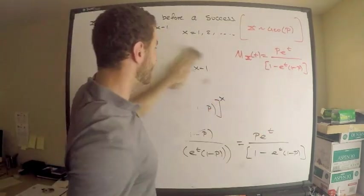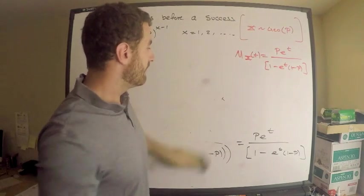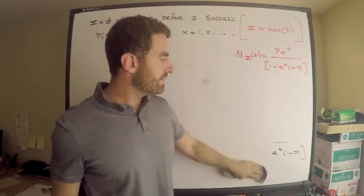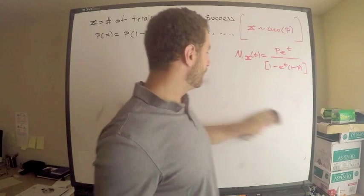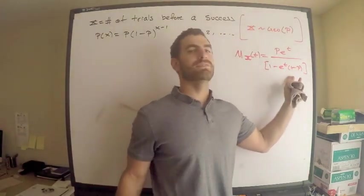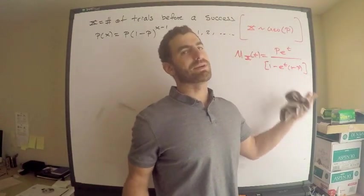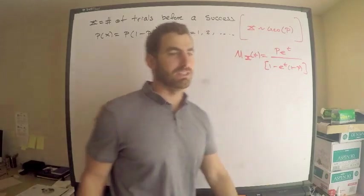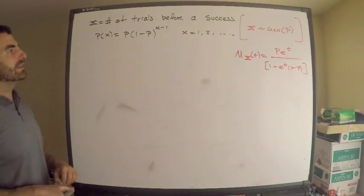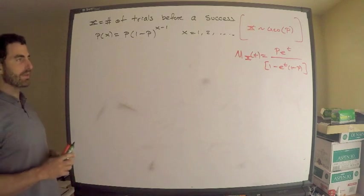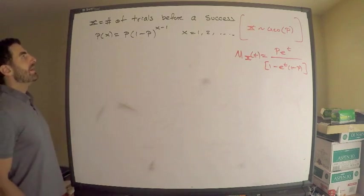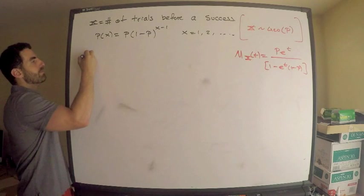If they gave you this MGF in a question and asked for an expected value, it would be quite easy to compute — you could recognize this is geometric and you know what the expected value of a geometric sum is.